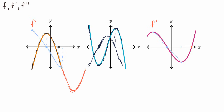What I very roughly just sketched out looks an awful lot like the brown graph. So the brown graph does indeed look like the derivative of the blue graph. That means the blue graph is f, the brown graph is f prime, and if brown is f prime then the derivative of that is going to be f double prime.